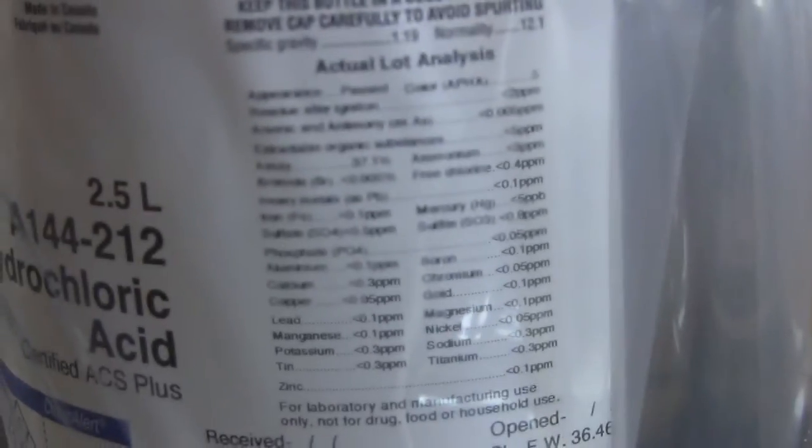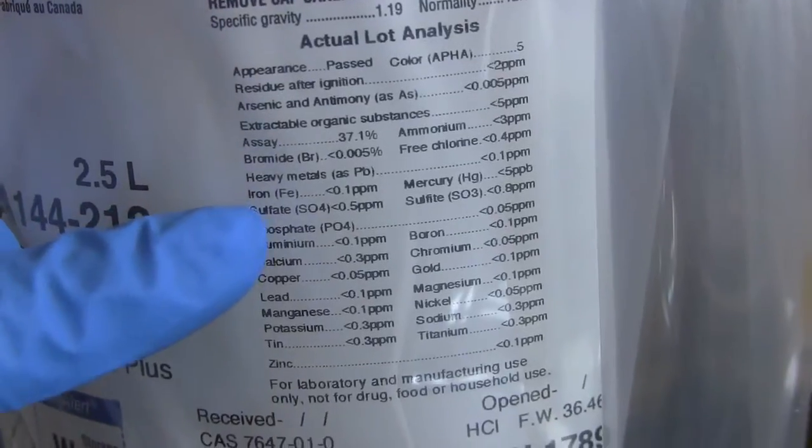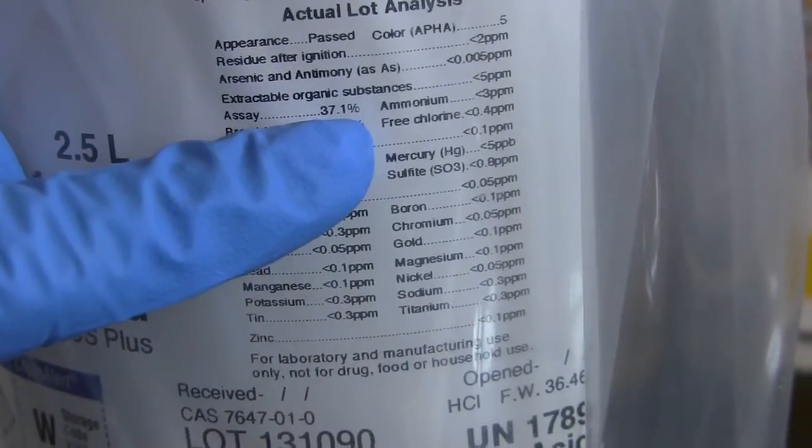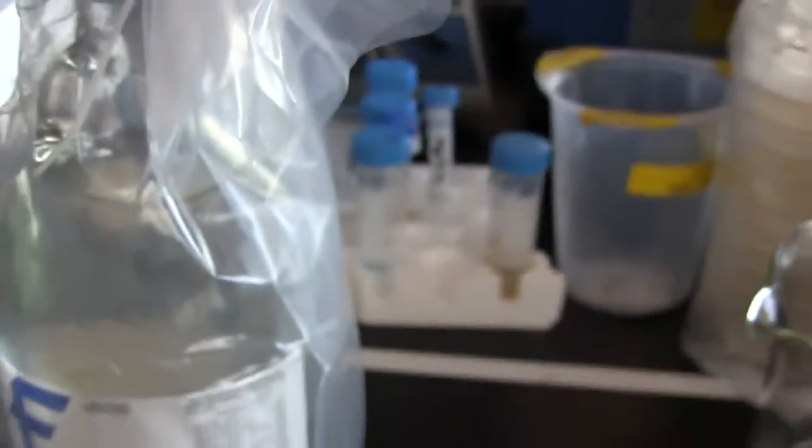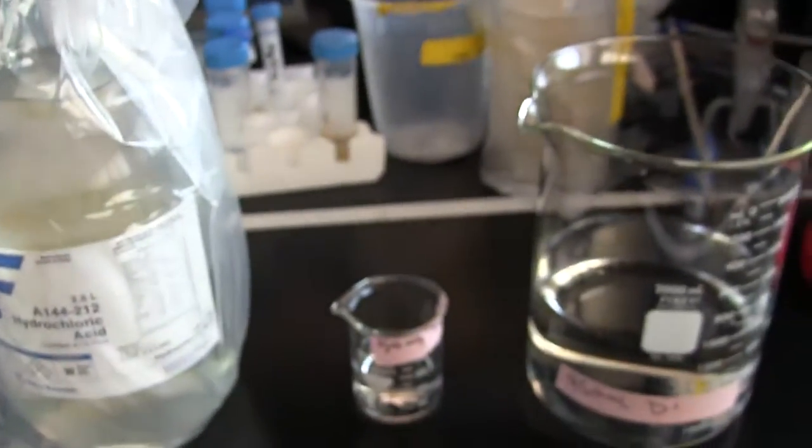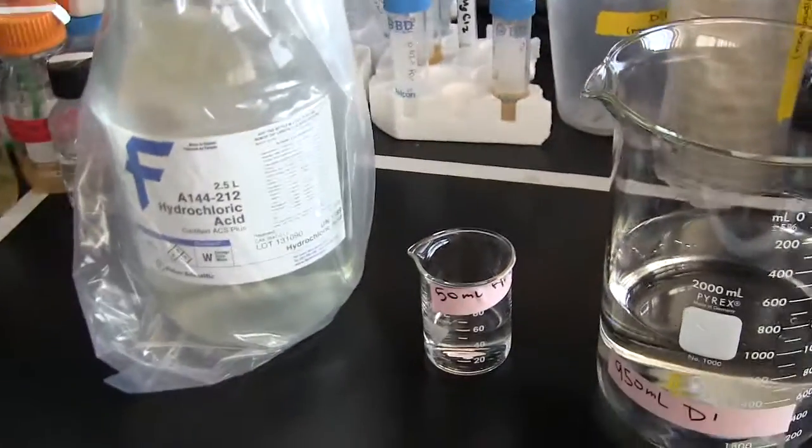What you need to know is that concentrated hydrochloric acid from the supplier has a concentration of 37%. Concentrated hydrochloric acid is always between 32% and 38% when it comes from the supplier.